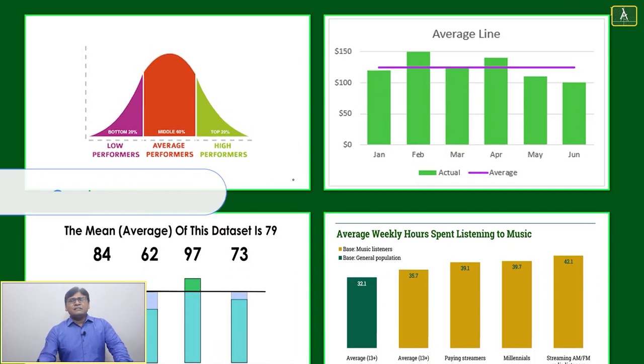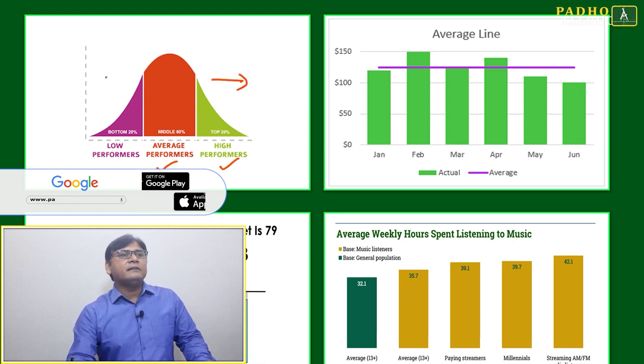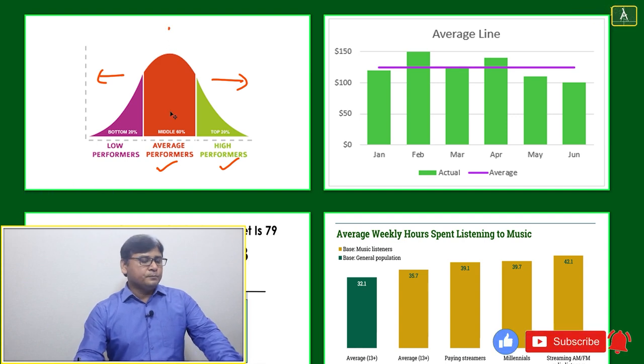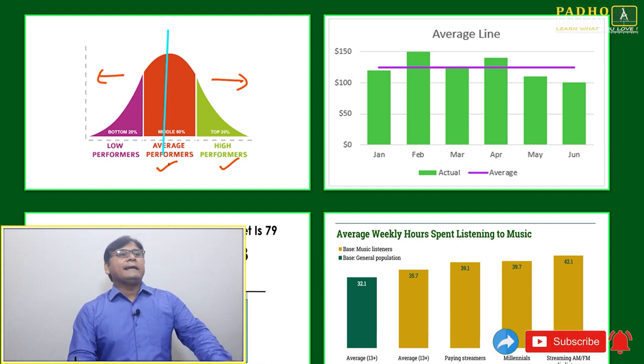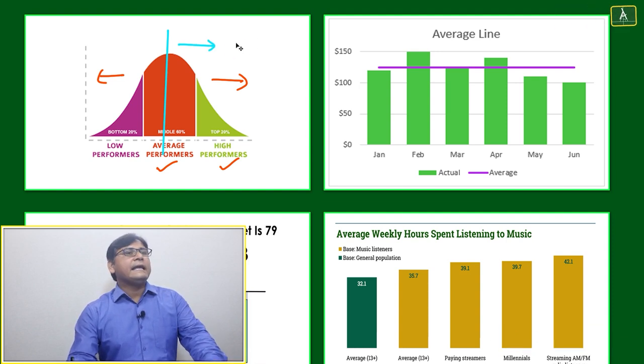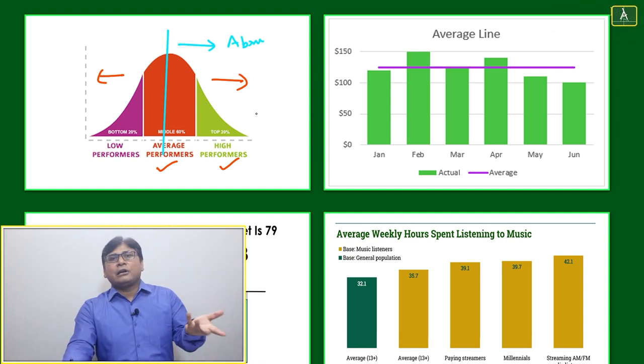We'll try to understand the same thing in a visual way. This is your average performance, with a central line. This side is higher, this side is lower performance. This side you can say are good performers or above the average. Generally, performance charts are given after any exam or mock test.